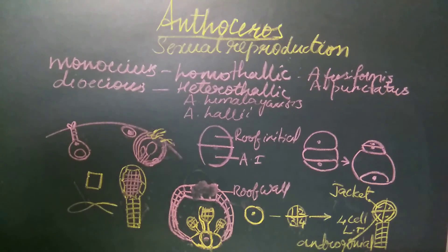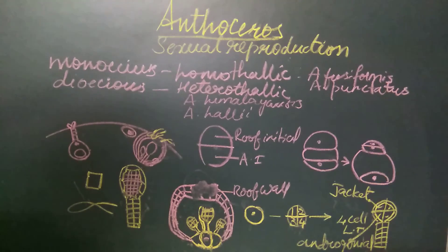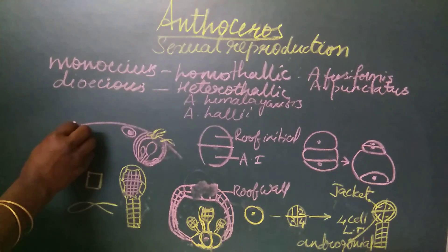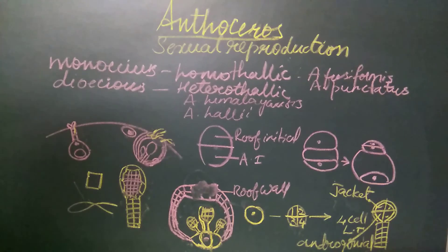Now we will see how the archegonia develops on the dorsal surface. The development of archegonia in Anthoceros is similar to what we have seen in Marchantia. You can refer to the development of archegonia in Marchantia because the developmental stages are similar.